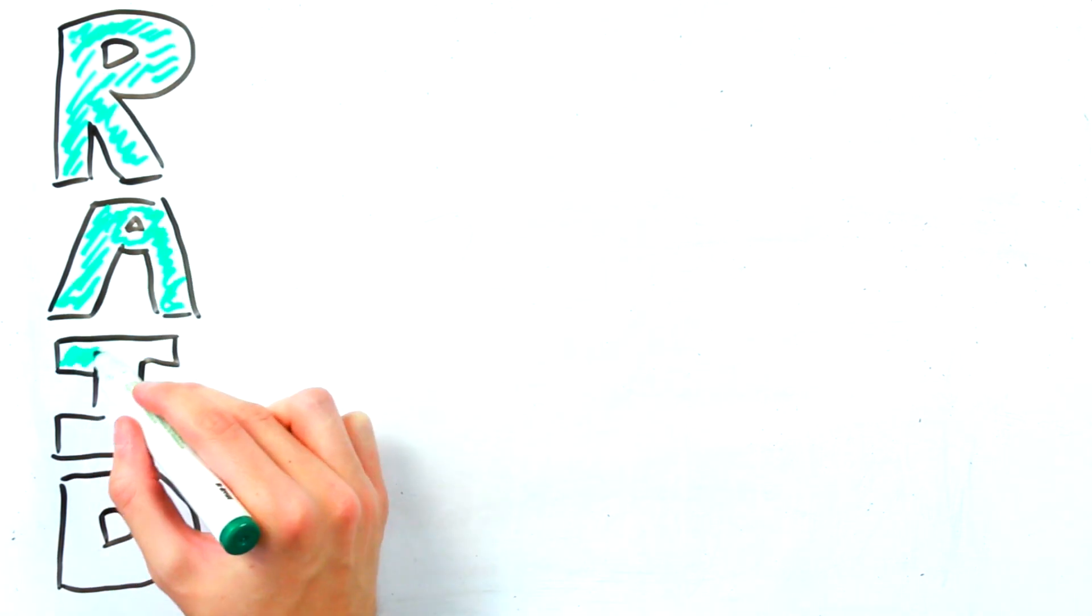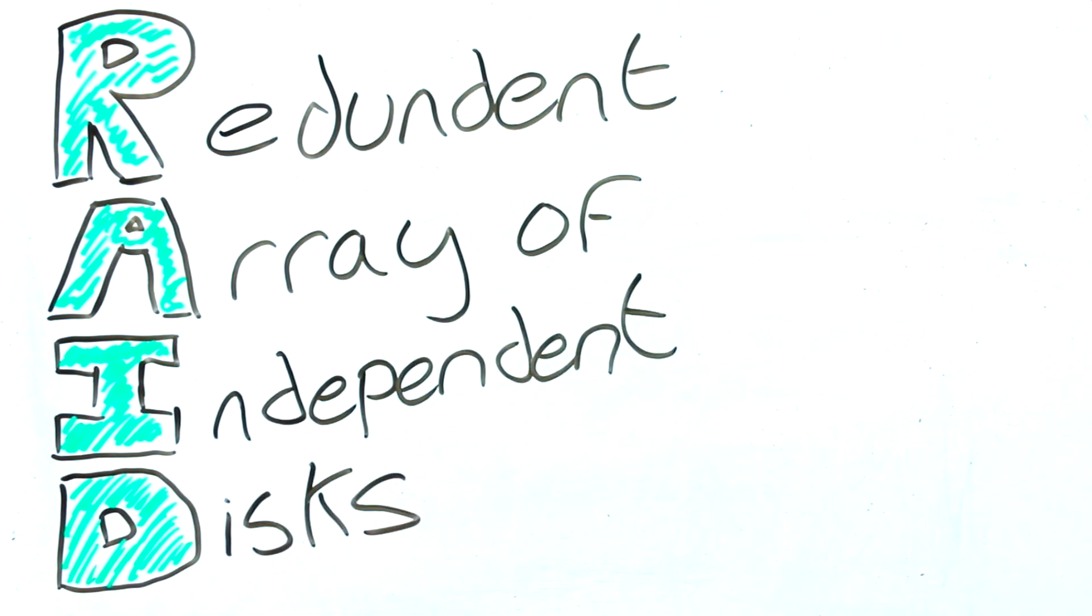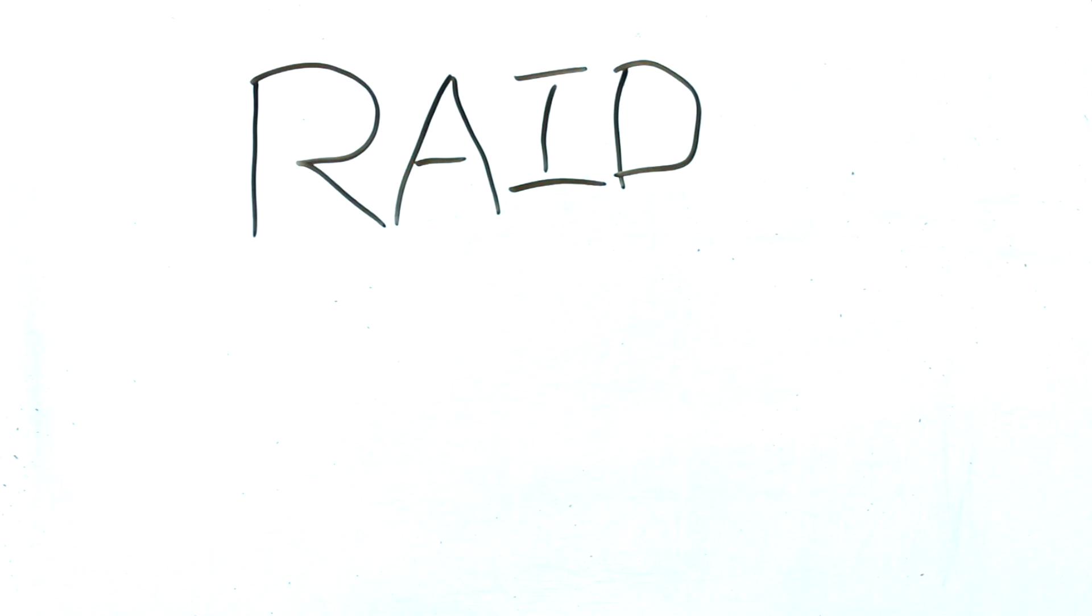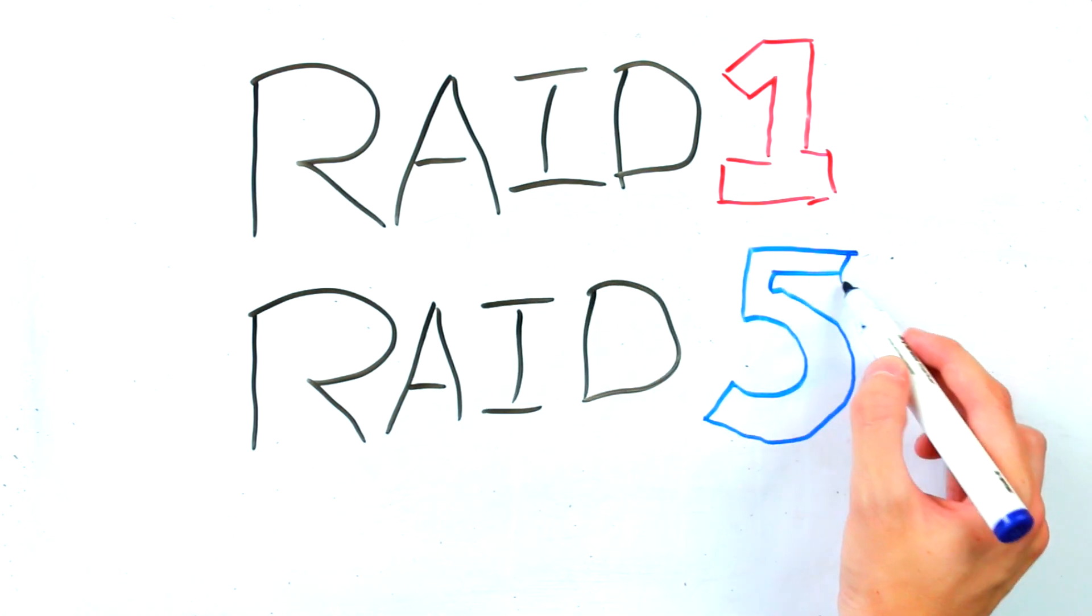Next we have RAID. This stands for Redundant Array of Independent Discs and is a feature available on all the Western Digital Purple hard drives that we sell. The idea behind RAID is to protect the footage you record from hard drive failure and depending on a lot of factors relating to your specific system you will have to choose one of two popular types of RAID, either RAID 1 or RAID 5.